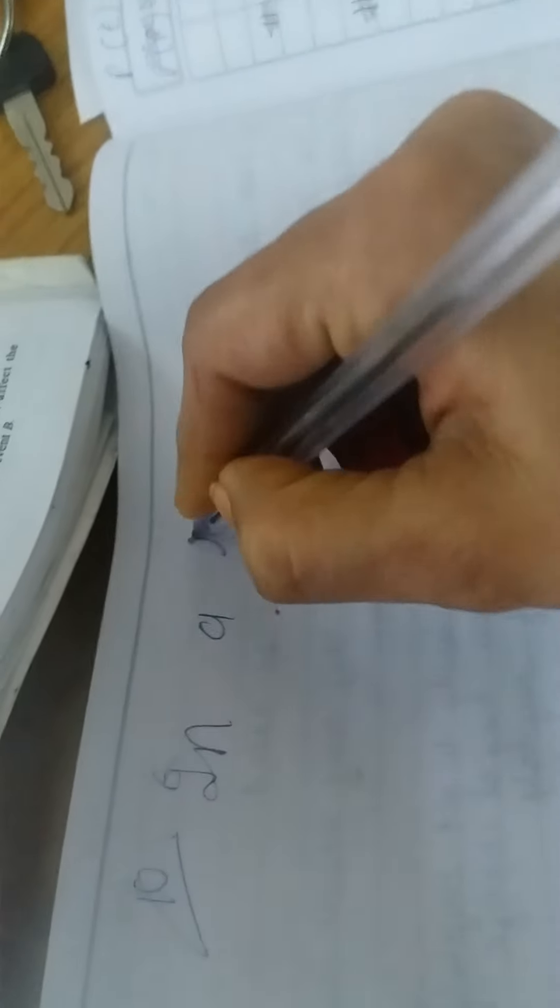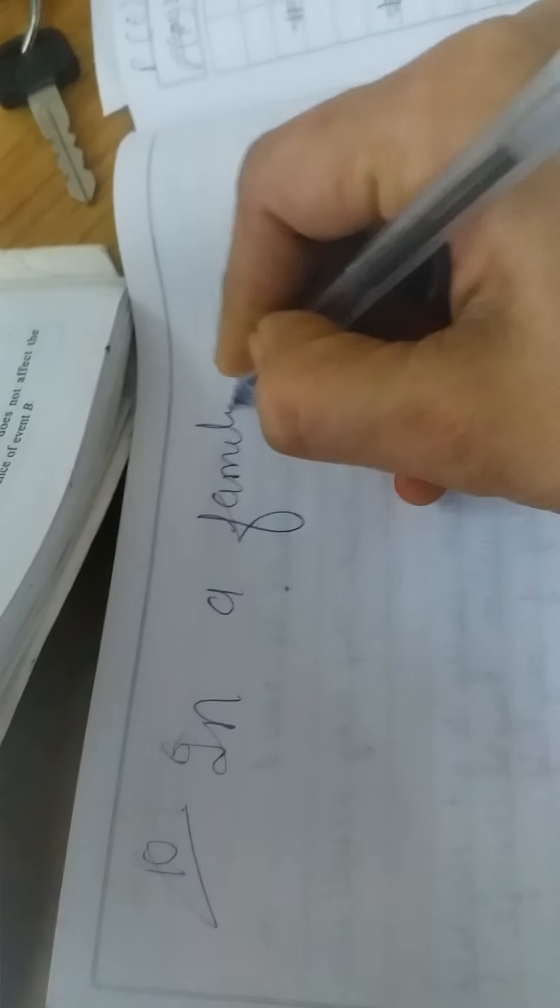Now see question number 10. In a family photo, the mother, father and son are standing randomly. Find probability of E by F. E is son is standing on one end and father is standing on another. First of all, let's see in a family photo, mother, father and son.